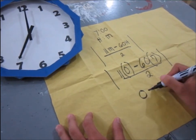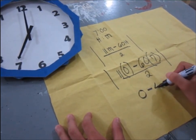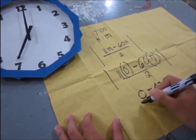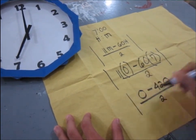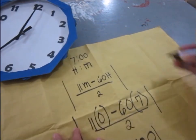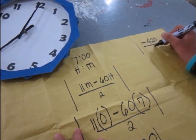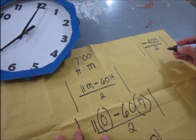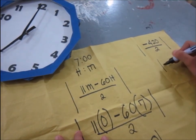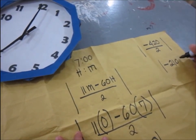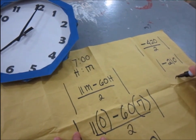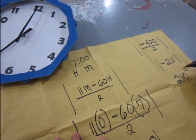11 times 0 is 0 minus 420 all over 2, absolute value. Then, absolute value of negative 420 all over 2, which is equal to the absolute value of negative 210. And absolute value is always positive, so 210 degrees.